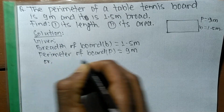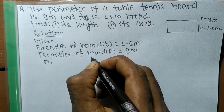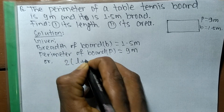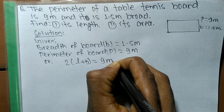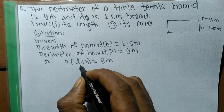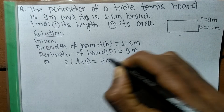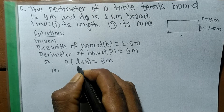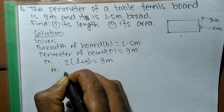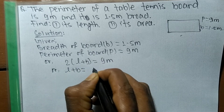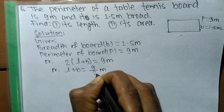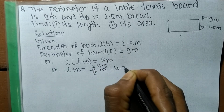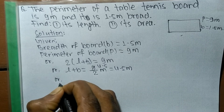As you know, the perimeter of a rectangle is 2 times (l plus b), so we write 2 times (l plus b) equals 9 meters, where l is the length and b is the breadth. Moving the 2 to the other side, it becomes division: 9 divided by 2 equals 4.5, so l plus b equals 4.5 meters.